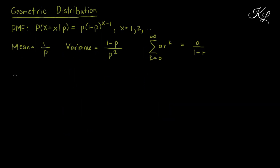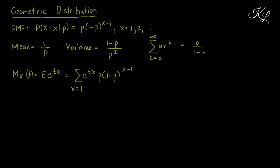Let's now derive the moment generating function for the geometric distribution. The MGF is M(t) = E[e^(tX)], which equals the summation of e^(tx) times the PMF p·(1-p)^(x-1) from x=1 to infinity. We factor (1-p)^(x-1) as (1-p)^x times (1-p)^(-1), and move the constants p and (1-p)^(-1) outside the summation.